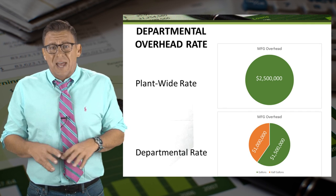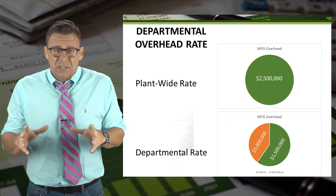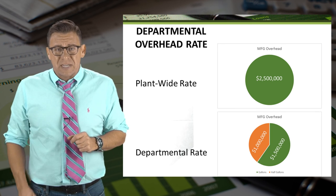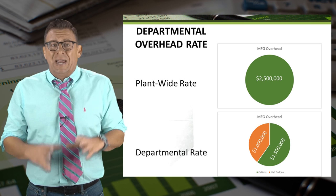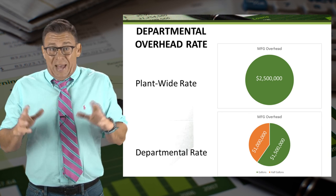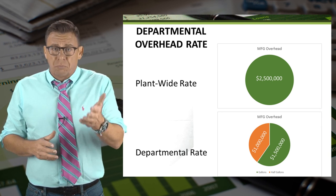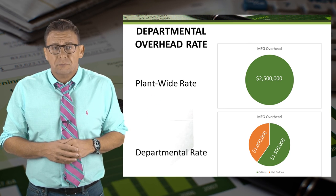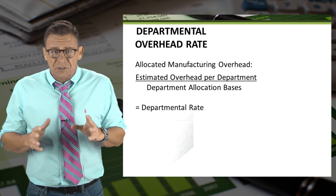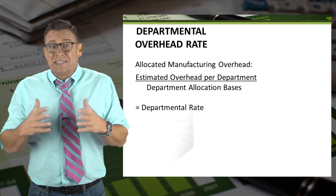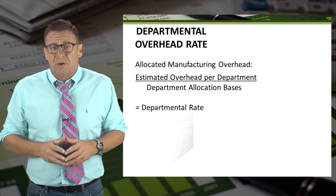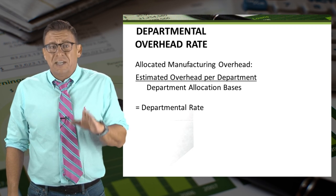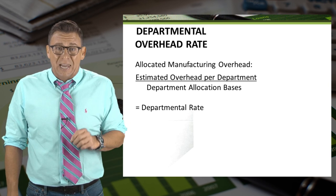So rather than have one pool of overhead to allocate with a plant-wide rate, we can refine the process by breaking out overhead by departments. Departments can be actual departments, product lines, or products, as shown here. Once overhead has been divided into departments, the process is similar to the predetermined overhead rate — we estimate the overhead by department and divide that by the department's allocation base.